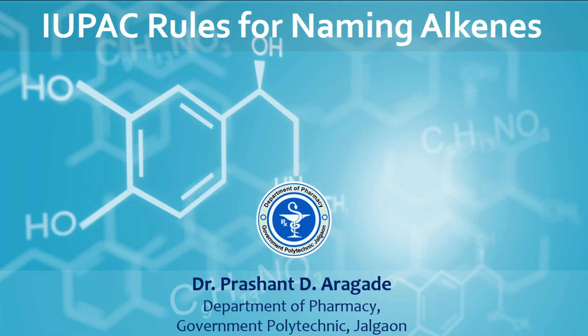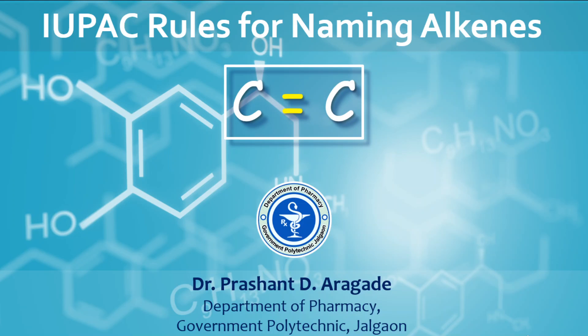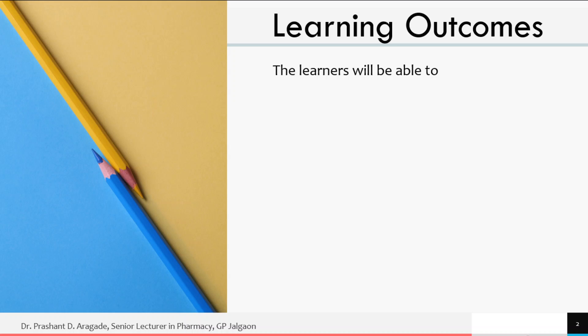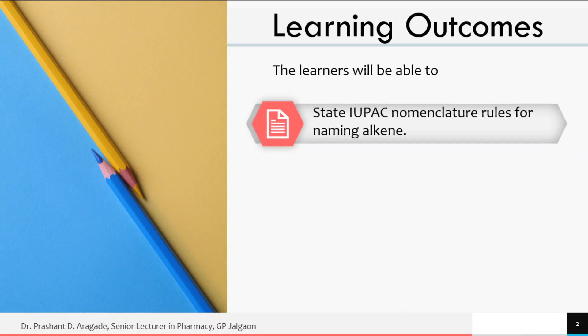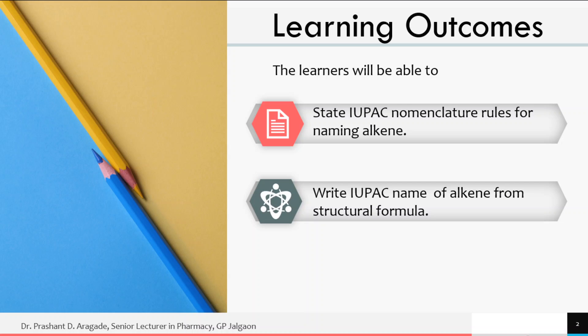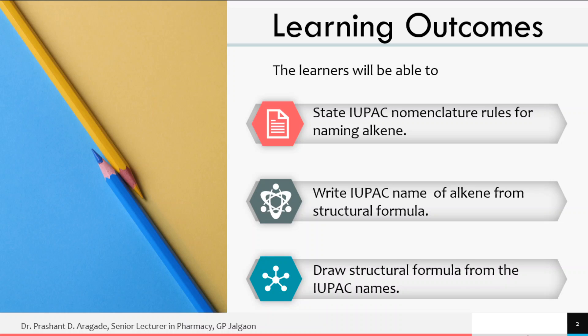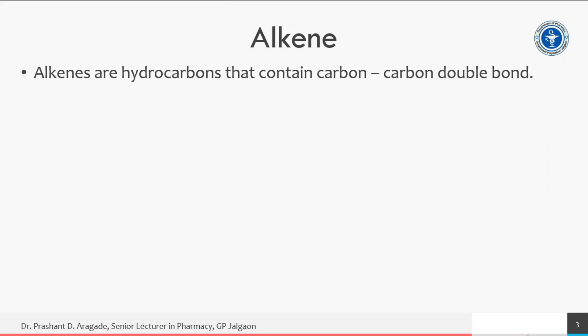Hello students, welcome to the video lecture on IUPAC rules for naming alkenes, that is compounds containing carbon-carbon double bond. The learning outcomes: at the end of this video lecture you will be able to state IUPAC nomenclature rules for naming alkenes, write the IUPAC name of an alkene from a structural formula, and draw a structural formula from the IUPAC name of an alkene.